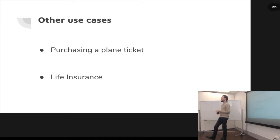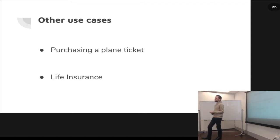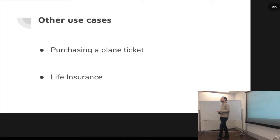Similar to when you go to the airport and scan your phone to get on the plane. But in this contract, you can put in other clauses — such as, if the airplane is two hours late, then return or refund $25 to each passenger. You can have all of that built into the purchase of the plane ticket.